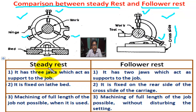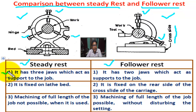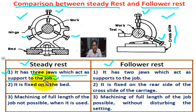What is the difference between steady rest and follower rest? Number one: steady rest has three jaws which act as support for the job. For follower rest, number one: it has two jaws which act as support for the job.